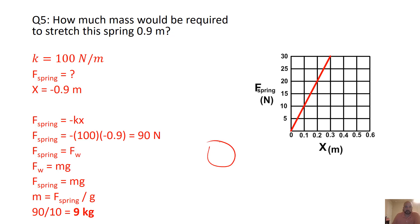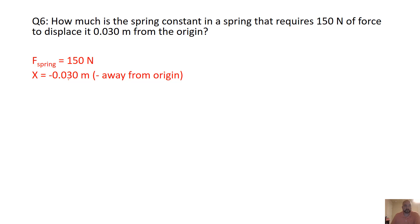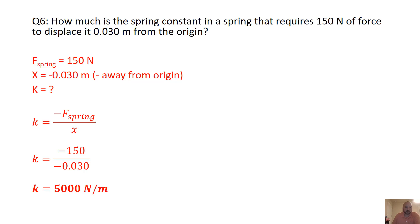So a mass of 9 kilograms tied to the spring would displace it negative 0.9 meters — it would stretch 0.9 meters away from equilibrium and want to return. Next problem: what is the spring constant of a spring that requires 150 newtons of force to displace it 0.03 meters from the origin? With F = 150 N and x = negative 0.03 m, rearranging the spring equation for K gives a spring constant of 5,000 N/m.